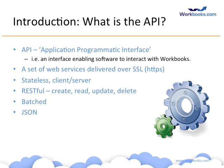Finally, the API is batched — you can operate on many records at once. For example, you might send a create statement to Workbooks saying 'create these 100 records' and Workbooks would do that work and return 100 responses, all as one transaction. It's very efficient, and I'd encourage you to batch any requests you can because it will make things faster. In the next session, we'll talk about how you call the API and where you might choose to run that code.